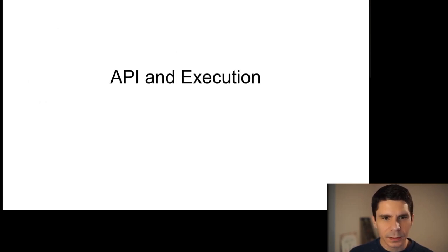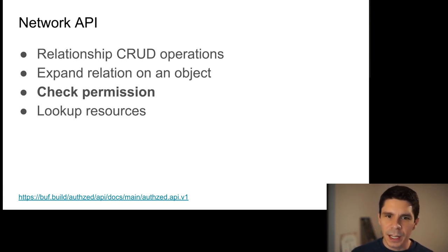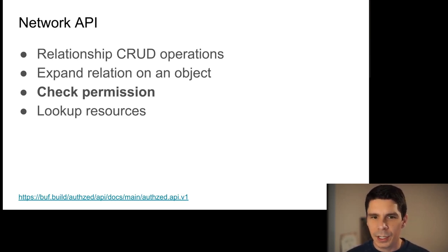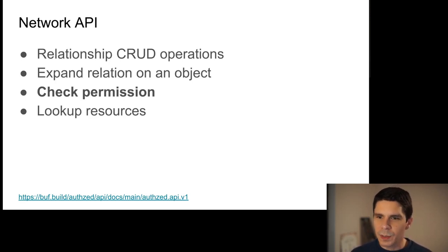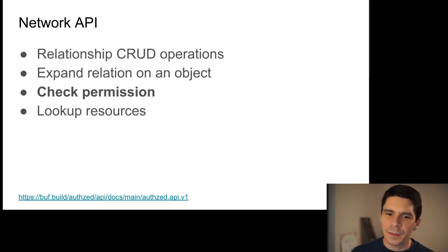Our network API is fundamentally CRUD operations on relationships, plus a few specialized operations for permissions. We have expand relation, which gives you the direct objects one level removed from the objects queried. We have check permission — the most important one — which makes yes-or-no decisions about whether someone is allowed to access something. And then lookup, which is the most novel API versus the Zanzibar paper: it starts at the subject and walks the graph backward to get back to the resources you have that permission on.